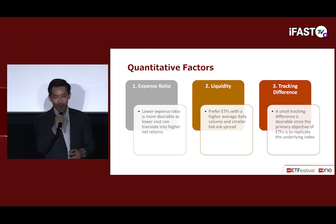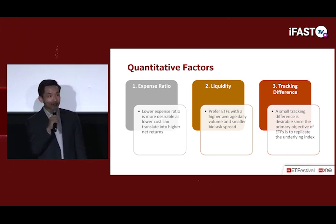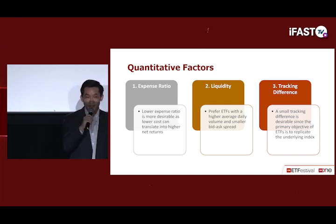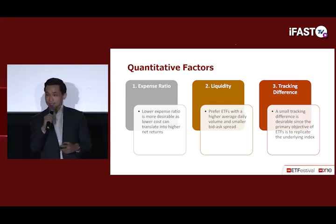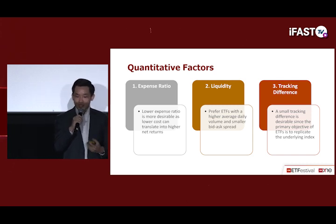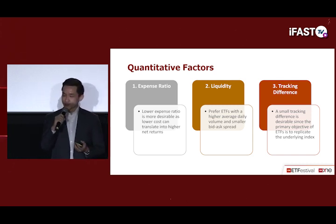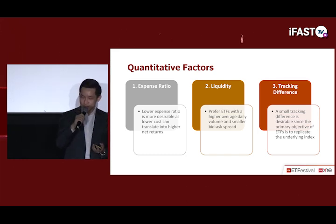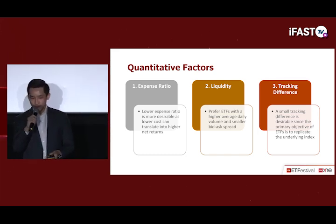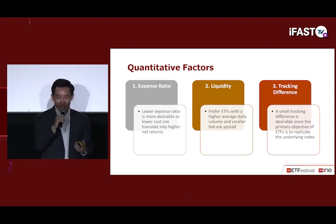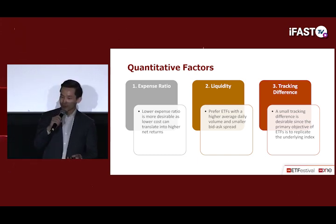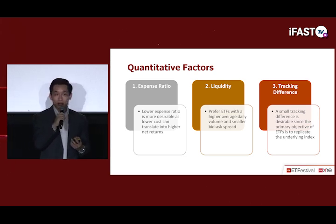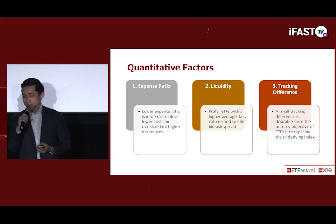We prefer ETFs that are more liquid, meaning they should have higher average daily volume and tighter bid-ask spreads. We also consider the tracking difference — the difference between the ETF's performance and its underlying index. All ETFs will have a tracking difference, usually due to factors like expense ratio, rebalancing costs, currency hedging costs, and securities lending. A smaller bid-ask spread and tracking difference is more desirable, as it indicates the ETF better tracks its underlying index.